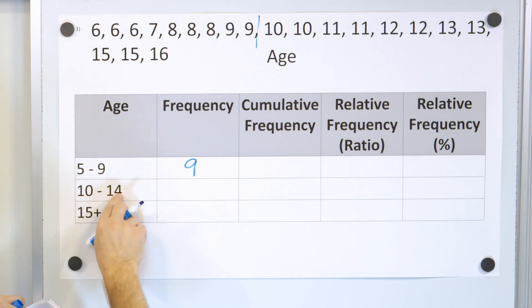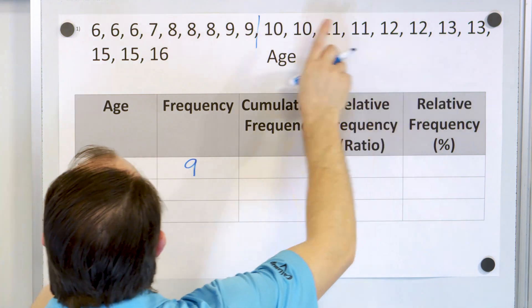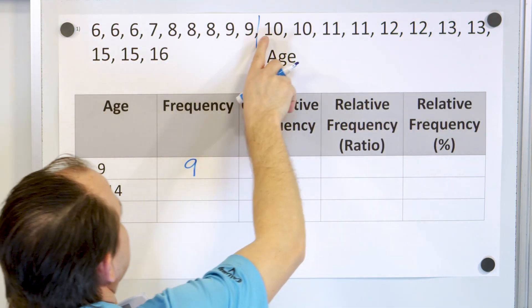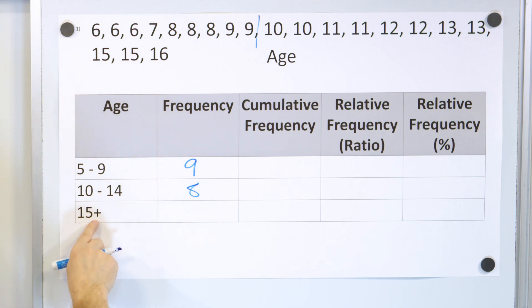Now how many from 10 to 14? 1, 2, 3, 4, 5, 6, 7, 8. And these are all bigger than 14. So there's 8 of them right here. And then how many larger than 15 or 15 plus means 15 or greater? We only have 3 people. So here are the data. Now when you just look at this, 9, 8, and 3, it's just easier to look at than all of these numbers.